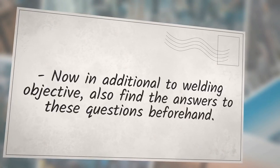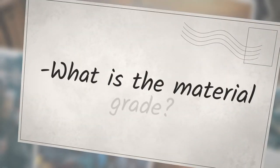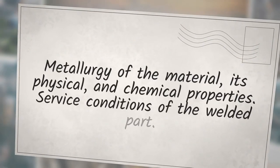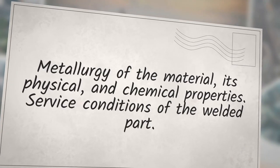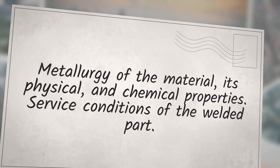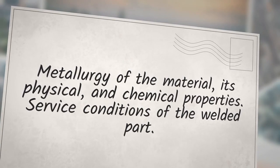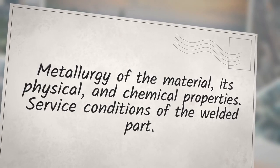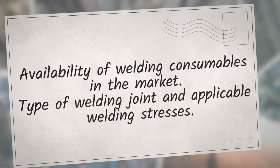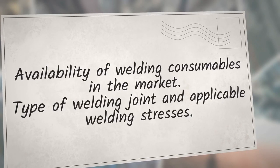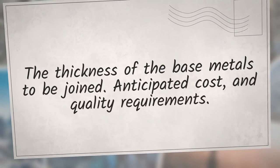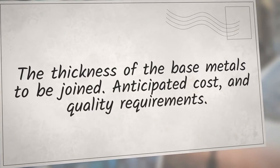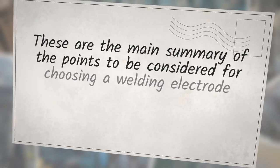In addition to welding objective, also find the answers to these questions beforehand: What is the material grade? Metallurgy of the material, its physical and chemical properties? Service conditions of the welded part, service temperature such as room temperature, elevated temperature, or deep sea? Availability of welding consumables in the market, type of welding joint and applicable welding stresses, the thickness of the base metals to be joined, anticipated cost and quality requirements? These are the main summary of the points to be considered for choosing a welding electrode, although there are various other associated factors that need to be considered too.